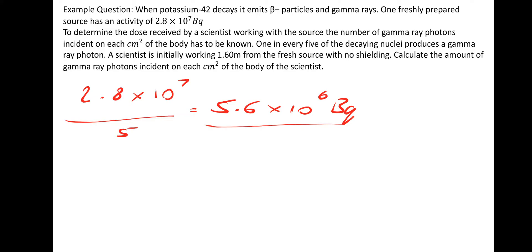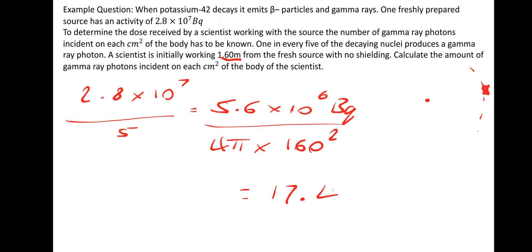We need to take this activity and divide it by the surface area of the sphere that would emanate out from a single point. We need a certain section of that sphere, so we're going to divide that activity by 4πr². And because the answer is wanted in centimetres squared, we put the 1.6 metres into centimetres — 160 cm — and divide by 4π times 160 squared. That gives us 17.4 decays per centimetre squared.